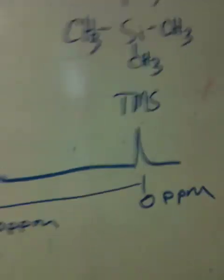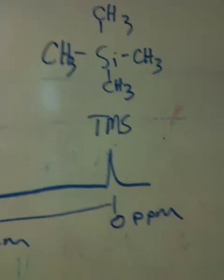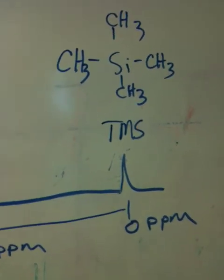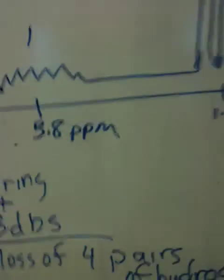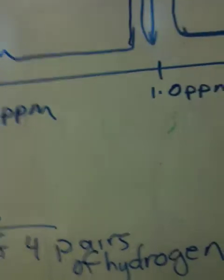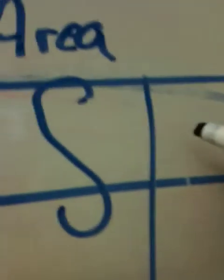We set tetramethylsilane at zero parts per million and the other peaks are relative to that. Now I'm going to set up my table. The first column is delta, which is the PPM. The second column is integral, which is area. The third column is splitting. And then in the fourth column, I draw some kind of a conclusion.